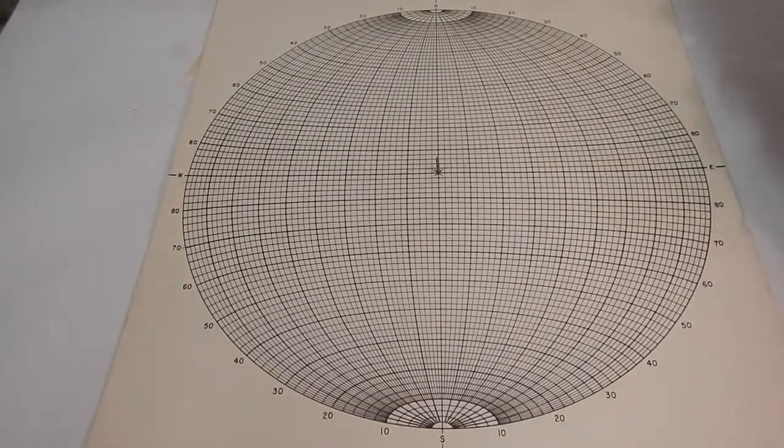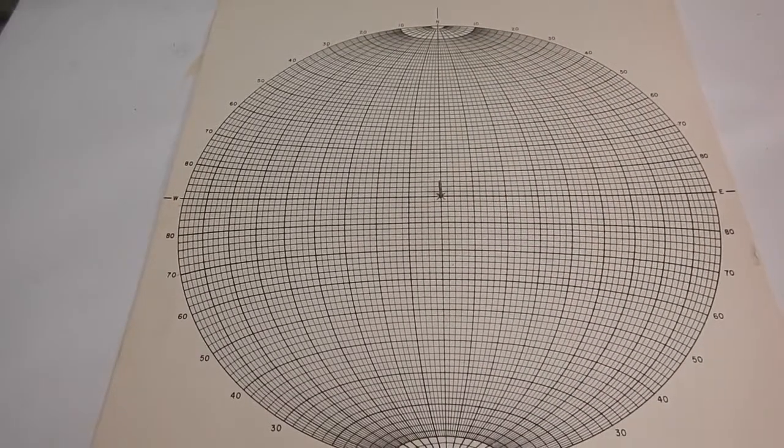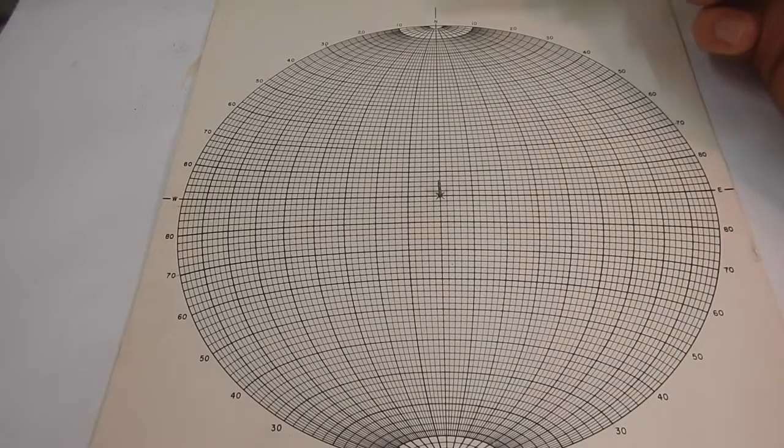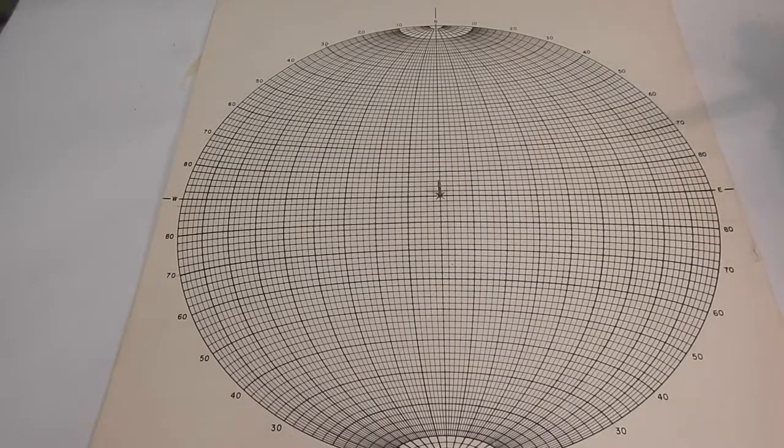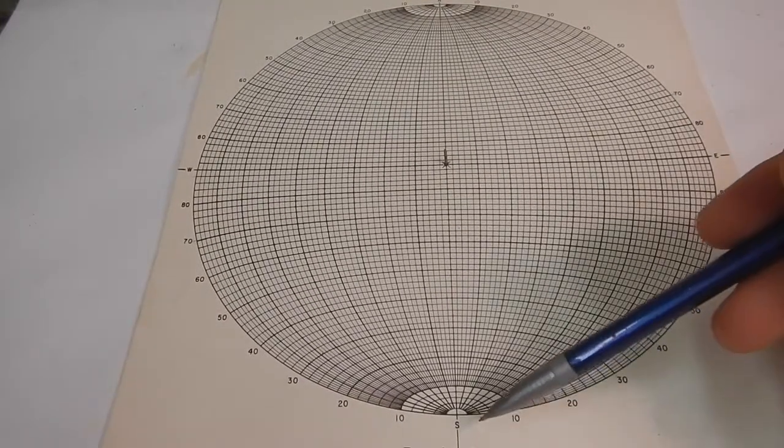But again, if we go through this, we have north up here. North up here, 10, 20, 80, to 90, which is at east, and then it goes back down east, 80, 70, all the way to south.